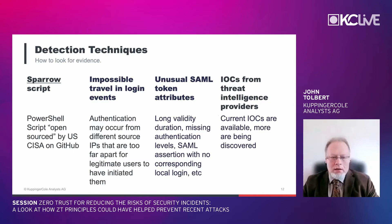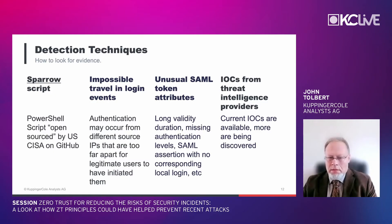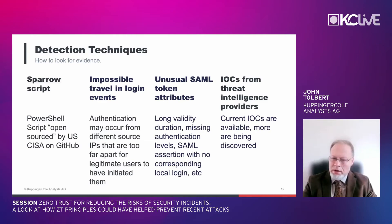CISA has published the Sparrow script — an open-source PowerShell script on GitHub — for detection. Three conceptual detection approaches: first, impossible travel between login events for accounts (especially accounts that shouldn't exist in your Active Directory); second, SAML tokens with anomalous features such as unusually long validity durations, missing authentication level information, or no corresponding local login event; third, indicators of compromise from threat intelligence providers, which are released as they are discovered.